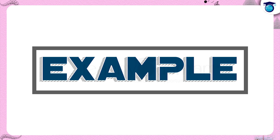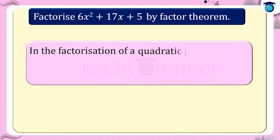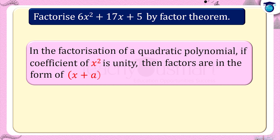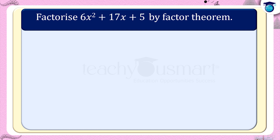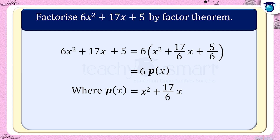Let's do another example. Factorize 6x squared plus 17x plus 5 by using the factor theorem. In the factorization of a quadratic polynomial, if the coefficient of x squared is unity, then factors are in the form (x plus a) multiplied by (x plus b). Here the coefficient of x squared is 6, so let us make the coefficient of x squared unity. Taking 6 as a common factor we get 6 multiplied by (x squared plus 17 by 6 x plus 5 by 6), which can be written as 6·p(x) where p(x) equals x squared plus 17/6 x plus 5/6.